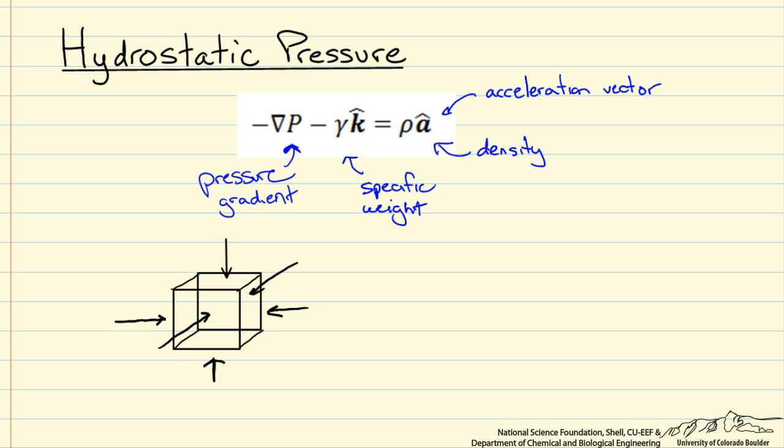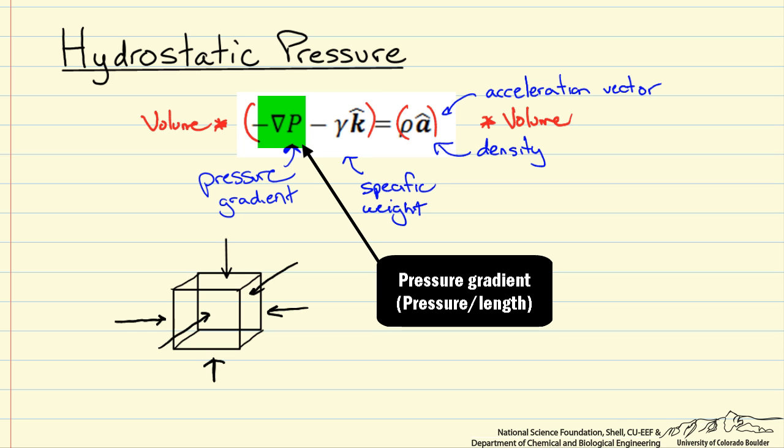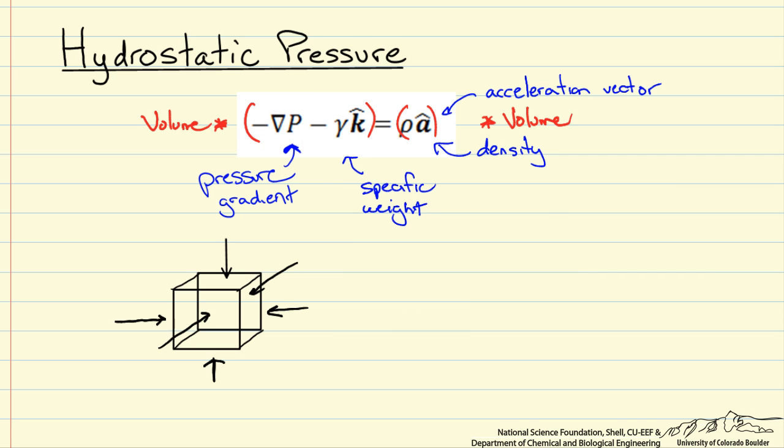And again with the vector we are looking at all of our Cartesian coordinates and you can see that this is just a force balance. We have our mass times our acceleration divided by a volume, so if we multiply both sides by volume we would have force on the right side, mass times acceleration, for our specific weight which is a weight per volume we would therefore just have weight and our pressure times a volume gives us a force and you can check the units on that to verify.